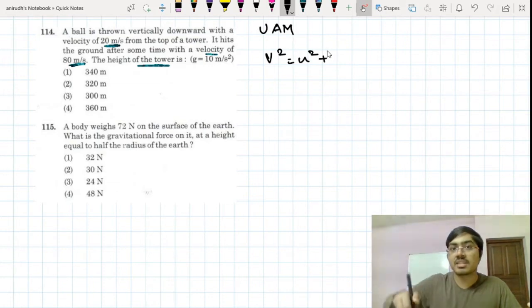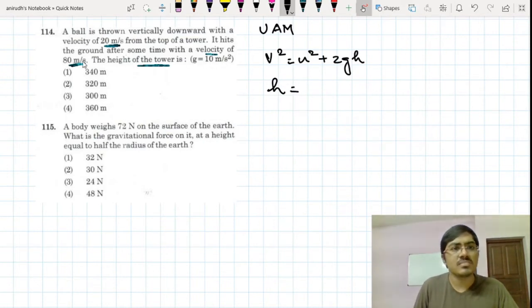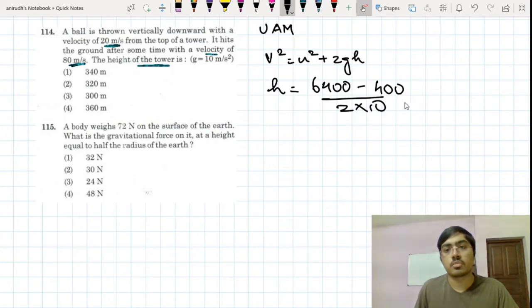So you can simply use v squared equals u squared. This time the motion is towards the gravity direction itself, so this is 2gh. So h is equal to v squared, that is 6400, minus u squared, that is 400, divided by 2 into 10. Therefore the answer is 300 meters.